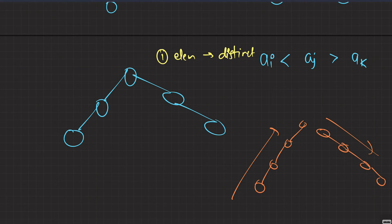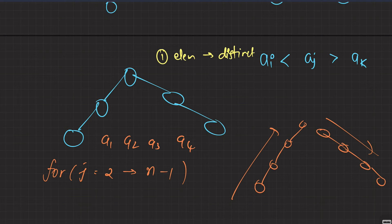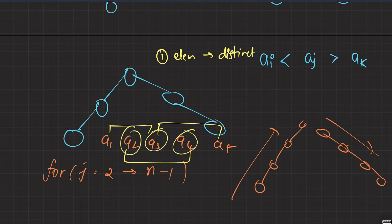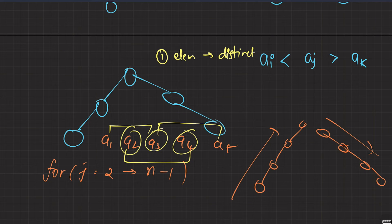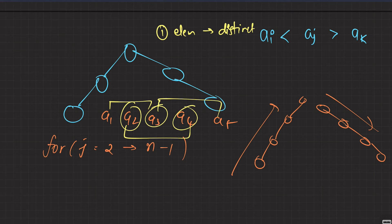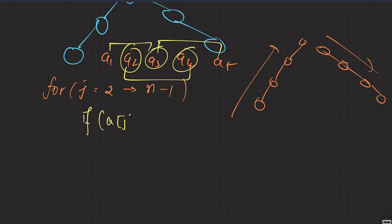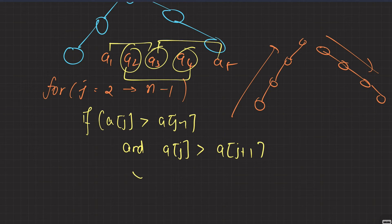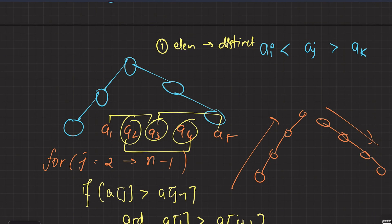It suffices to check consecutive triplets. You can go from j equals 2 to n minus 1 and check each consecutive triplet: a1,a2,a3 then a2,a3,a4, etc. Just check: if array[j] is greater than array[j-1] and array[j] is greater than array[j+1], you have your answer. This follows directly from the fact that elements are distinct.